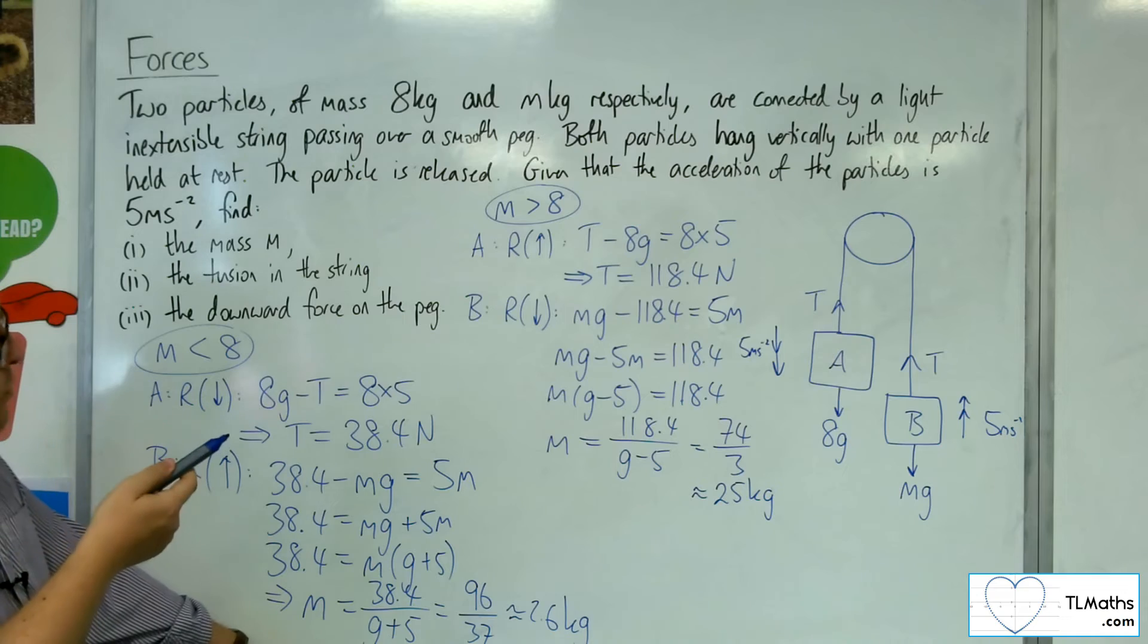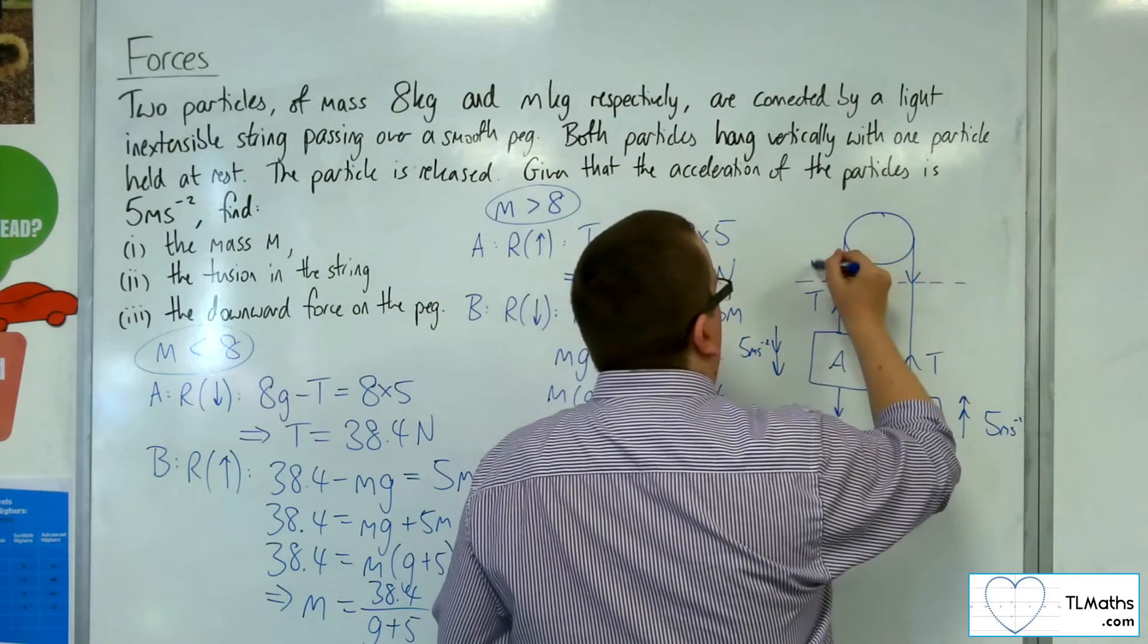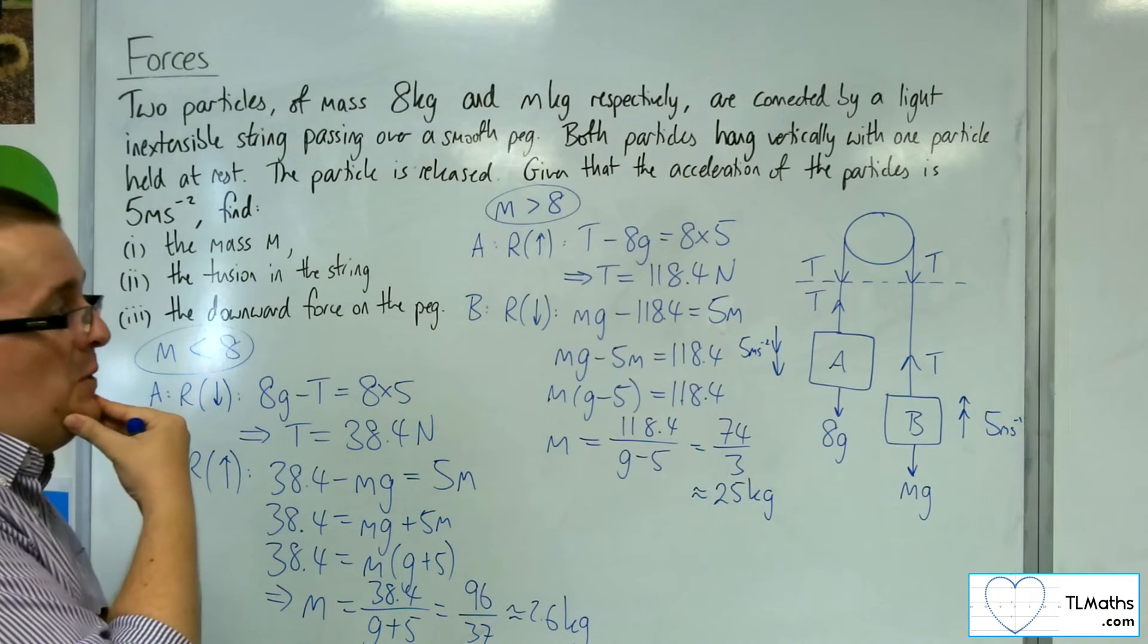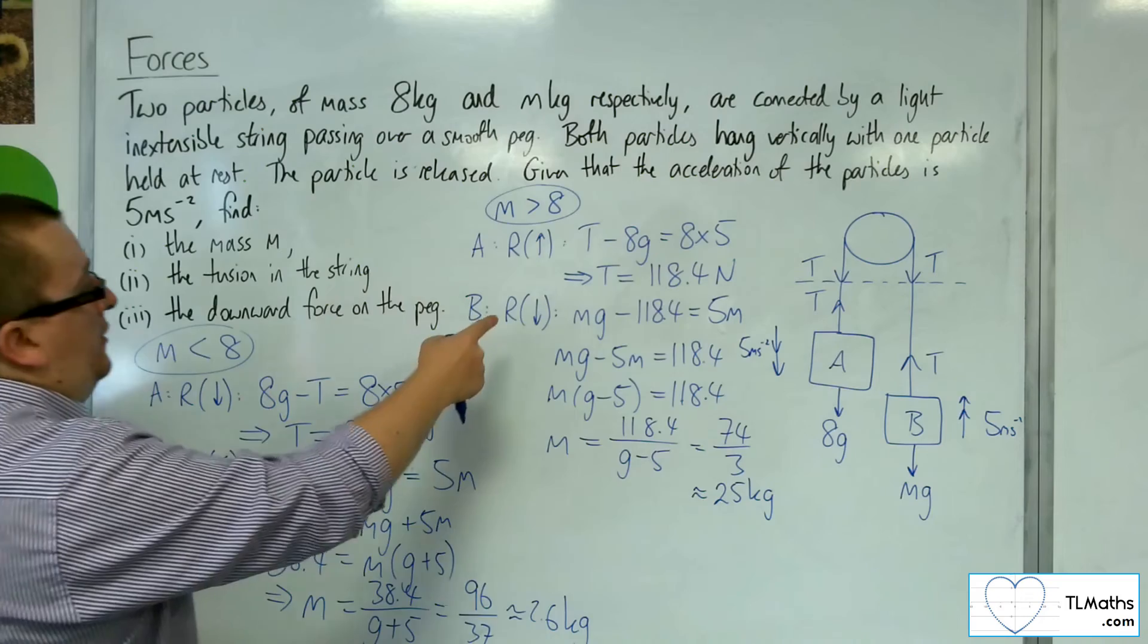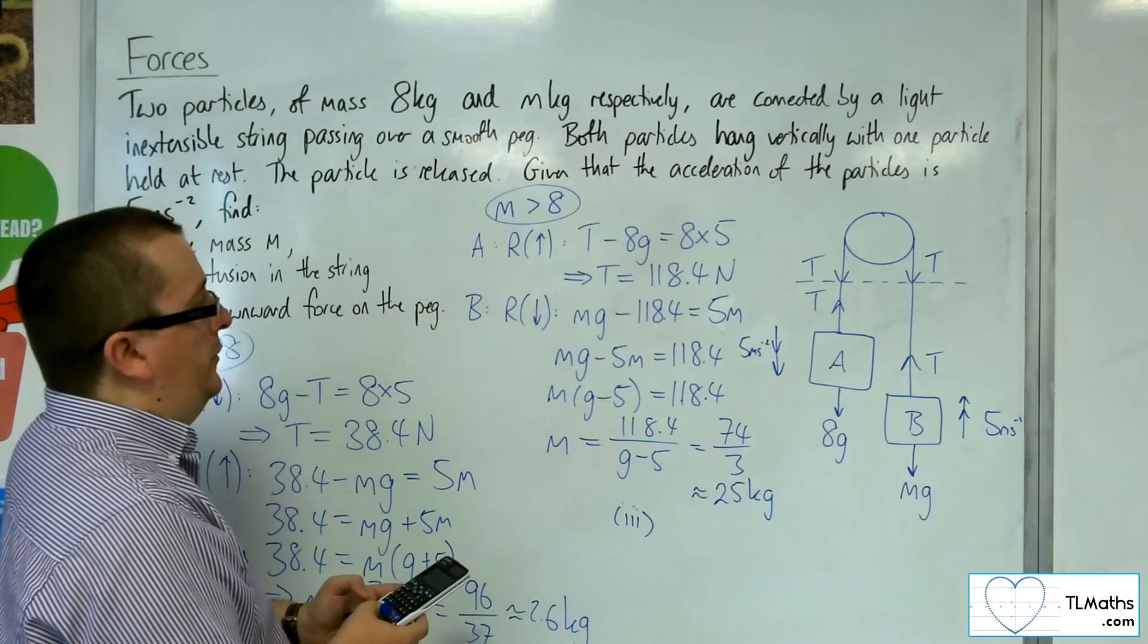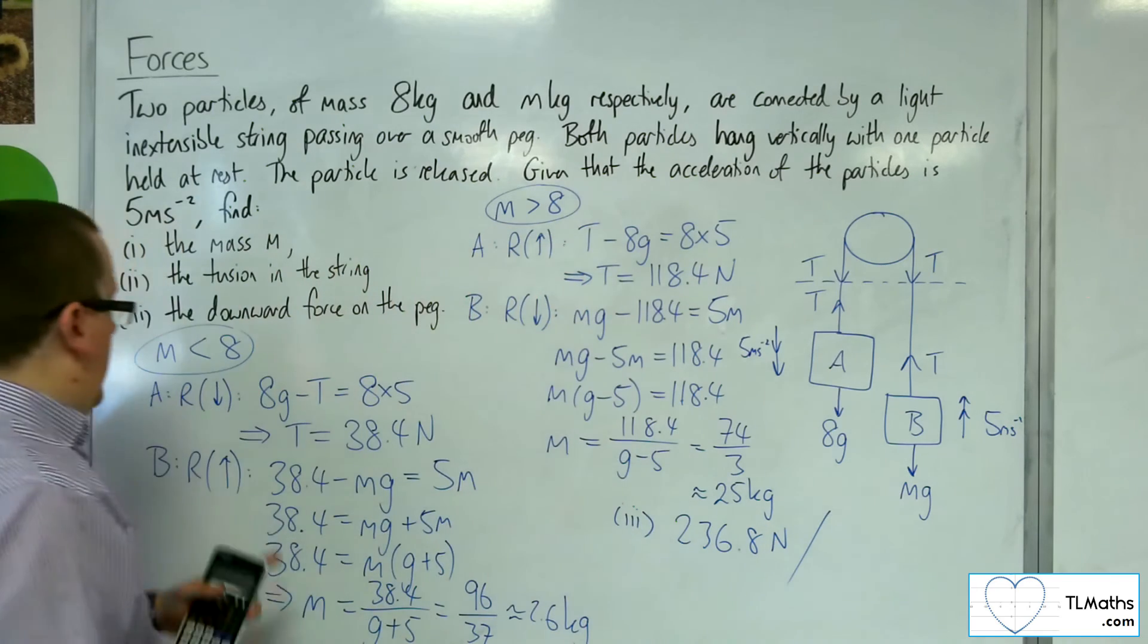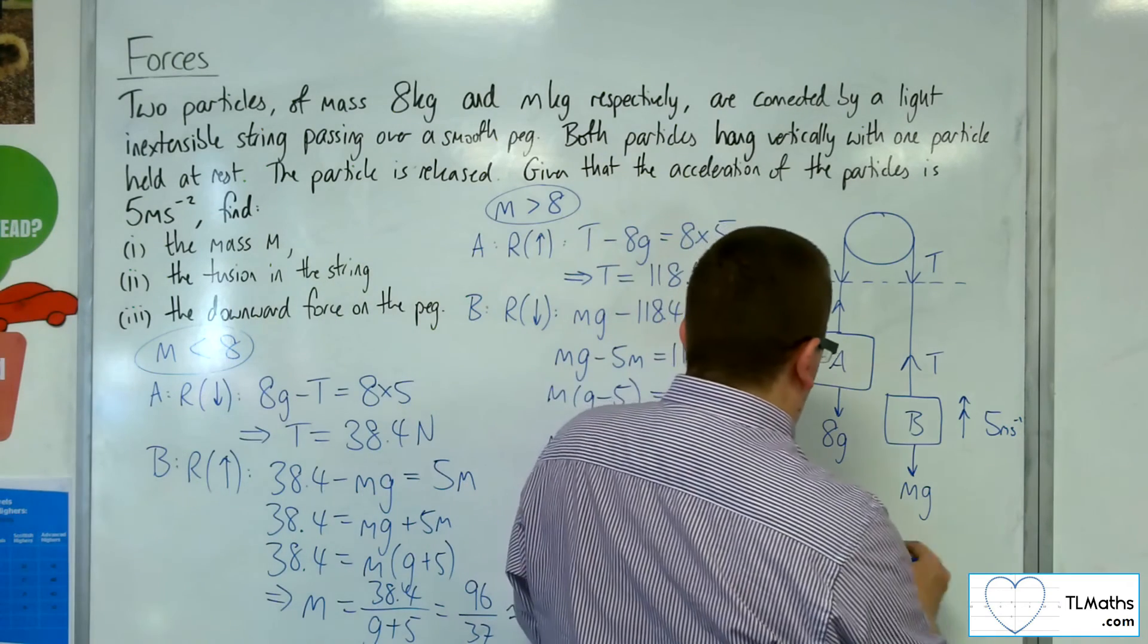For part three, the downward force on the peg. Now, thinking about it this way, you've got the tension in the string pulling down on the peg. So actually, when you think about the force that's acting on the peg, it's two lots of the tension. So in this case, if M was greater than 8, then the answer to part three would be two lots of 118.4. So that's 236.8 newtons. Or, if M is less than 8, it's two lots of the 38.4, which is 76.8 newtons.